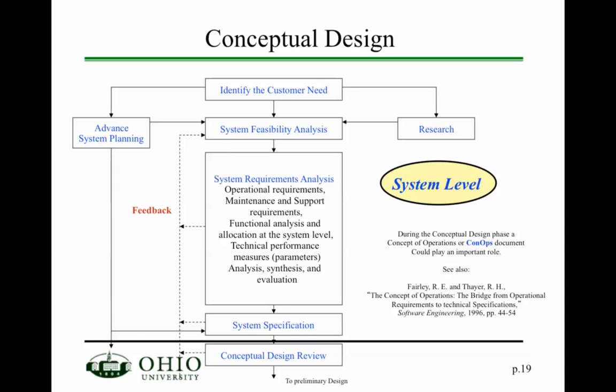After establishing that there is a customer need, you check whether it is feasible to build a system — this is called a system feasibility analysis. When done and it is feasible, you start putting together a set of requirements: statements that describe what the system needs to do. There are a variety of different requirements, including operational requirements, maintenance support requirements, functional requirements, and technical performance measures.